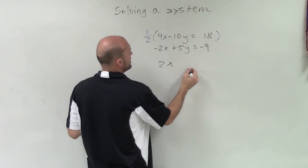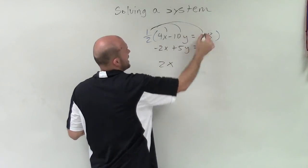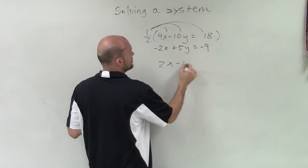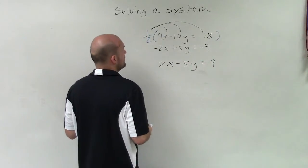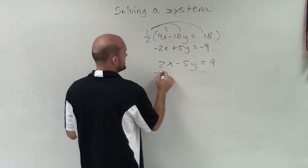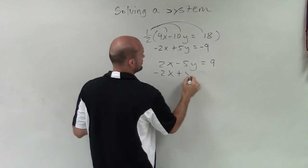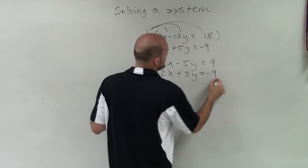So therefore, I have 2x. Make sure we multiply this by every single term in our equation, minus 5y equals 9. And then on the bottom equation it remains the same, negative 2x plus 5y equals negative 9.